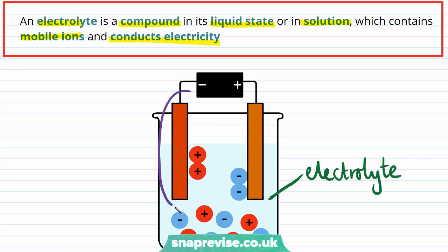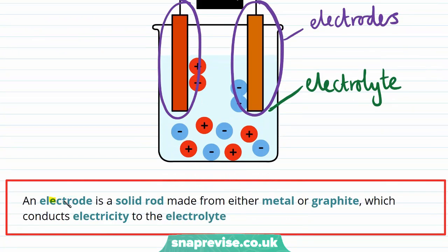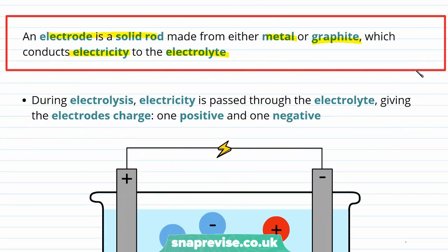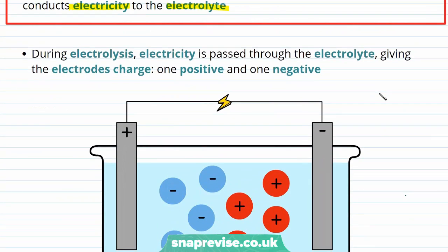The electrolysis process also involves two electrodes, which are shown here and here. An electrode is a solid rod which is made out of either metal or graphite. Metal and graphite will both conduct electricity, which is why they are chosen, because the electrode needs to conduct electricity to the electrolyte.